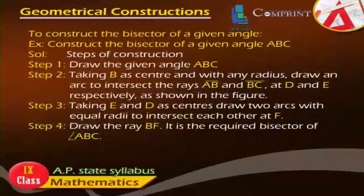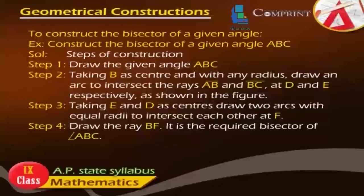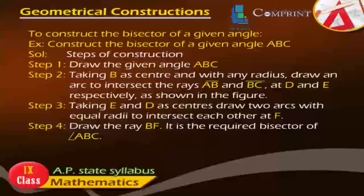Basic Construction: To construct the bisector of a given angle. Example: Construct the bisector of angle ABC. Steps of Construction. Step 1: Draw the given angle ABC. Step 2: Taking B as center and with any radius, draw an arc to intersect the rays BA and BC at D and E respectively, as shown in the figure.